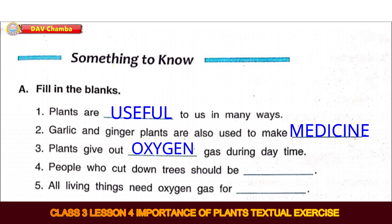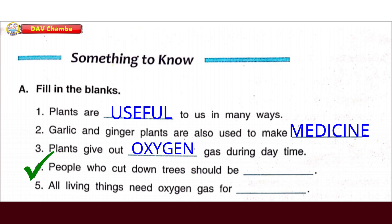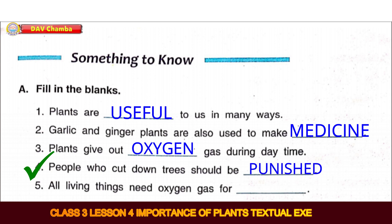Fourth: People who cut down trees should be dash. The answer is Punished. Fifth: All living things need oxygen gas for dash. The correct answer is Breathing.